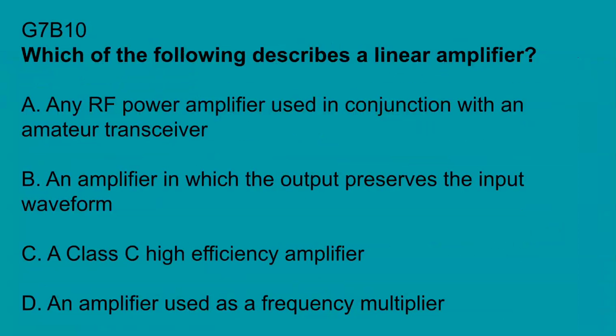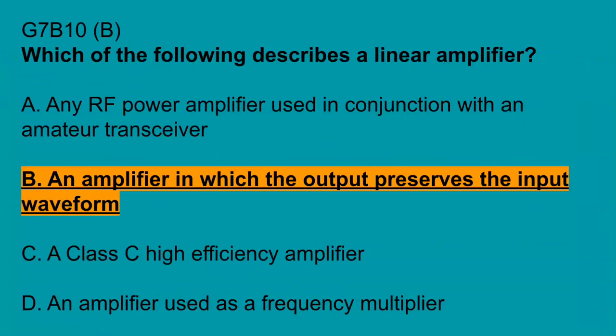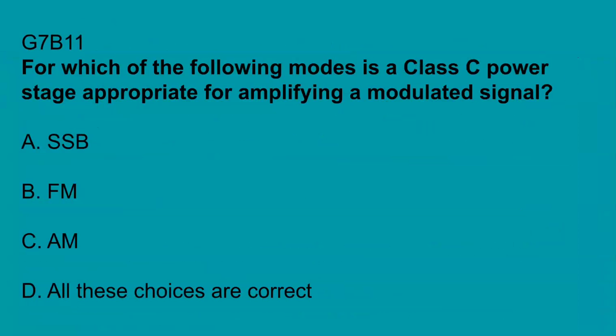G7B10, which of the following describes a linear amplifier? An amplifier in which the output preserves the input waveform. G7B11, which of the following modes is a class C power stage appropriate for amplifying a modulated signal? FM.